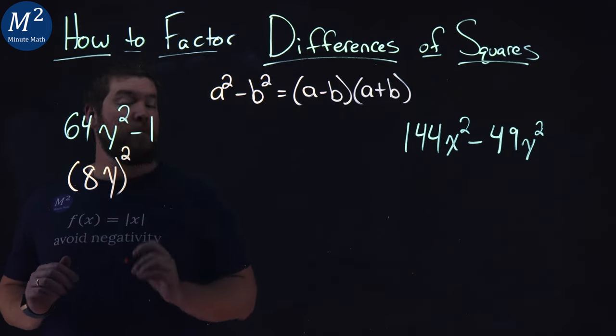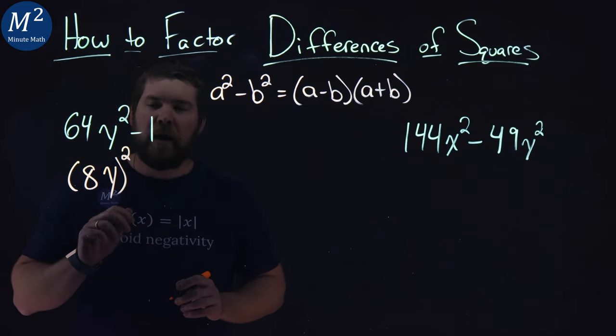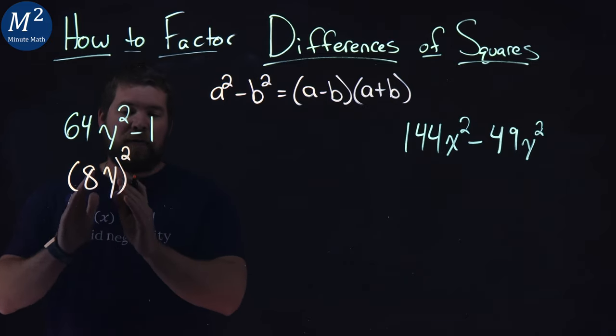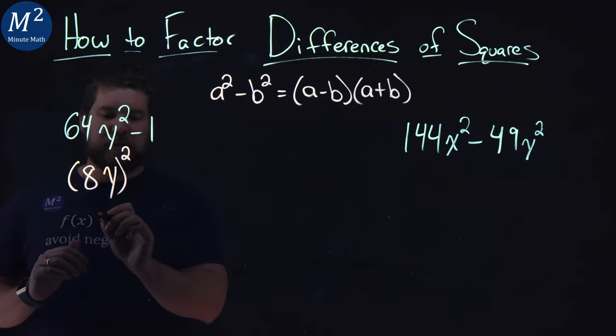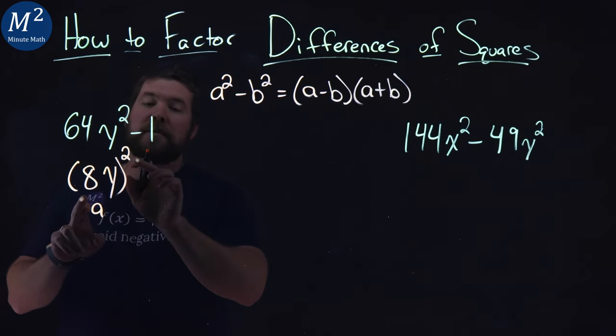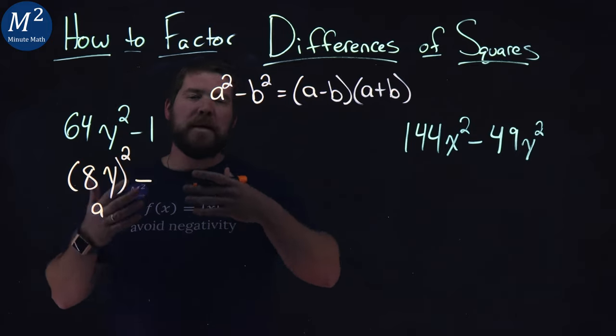and if I square everything, I have 64 is equal to 8 squared, and y squared is equal to y squared. And so my a value here is my 8y. We can see it right there. a, 8y, if we square it, 8y squared. Now, we have to write it in terms of a b squared.